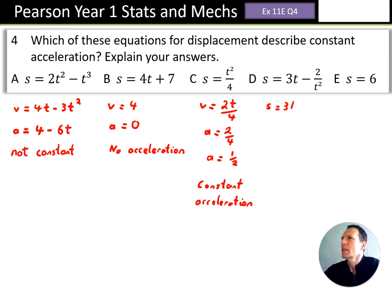Let's have a look at D. Right, first thing to do, rewrite our displacement equation, and bring that 2 over t squared into index notation, and we've got minus 2t to the minus 2.